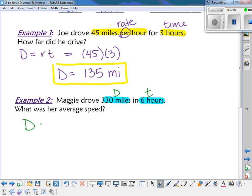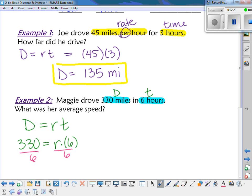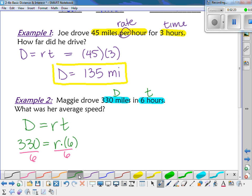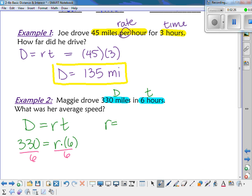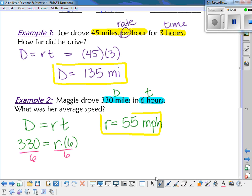So I know D equals RT. So I'm going to plug in what I know. The distance was 330. The rate is what I don't know, so I'll leave it as R times six. So if you divide both sides by six, then I get that the rate is 55 miles per hour.